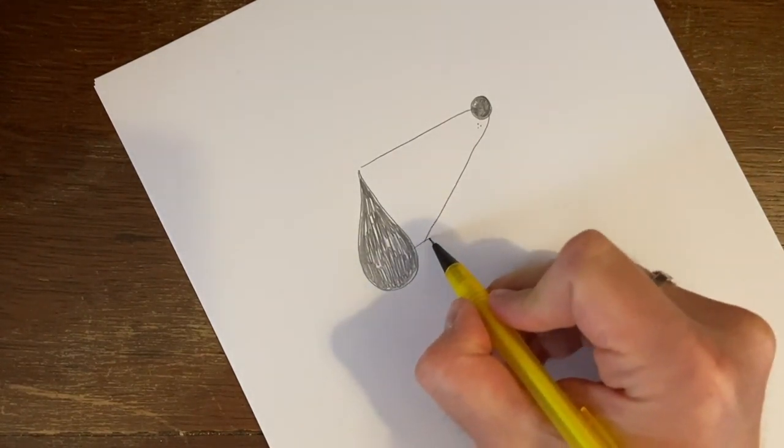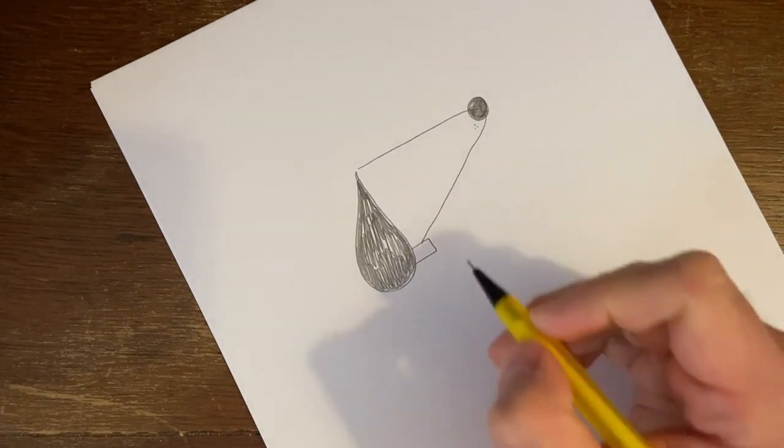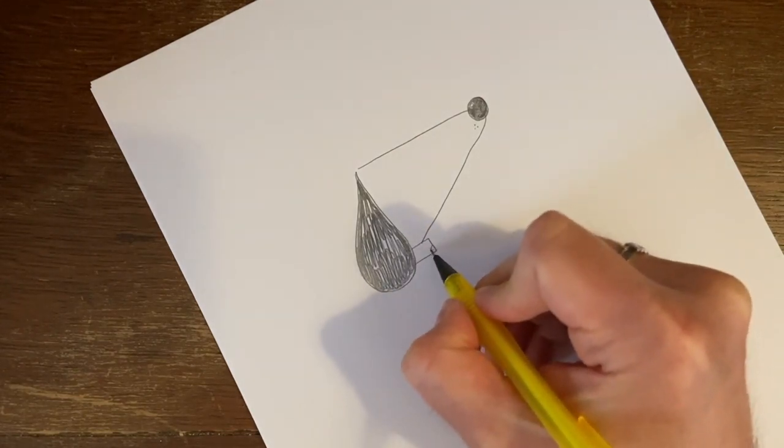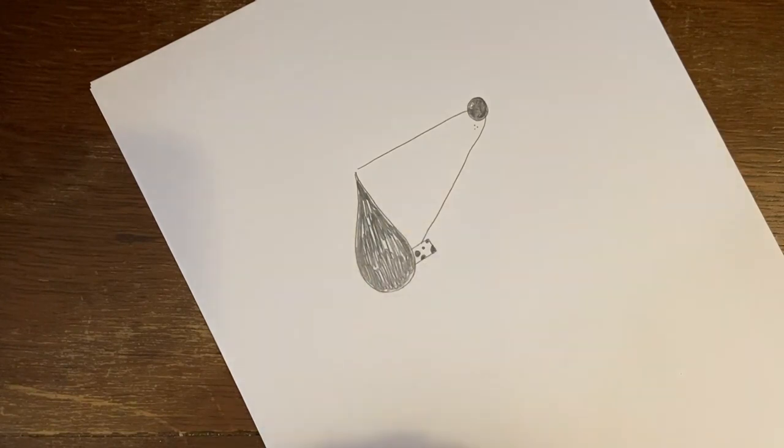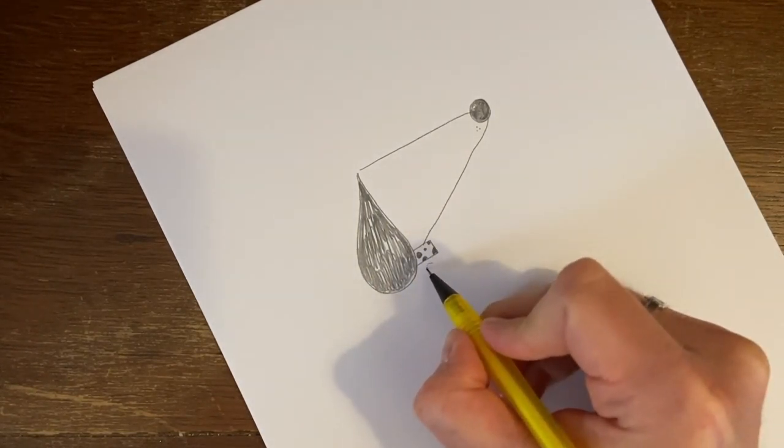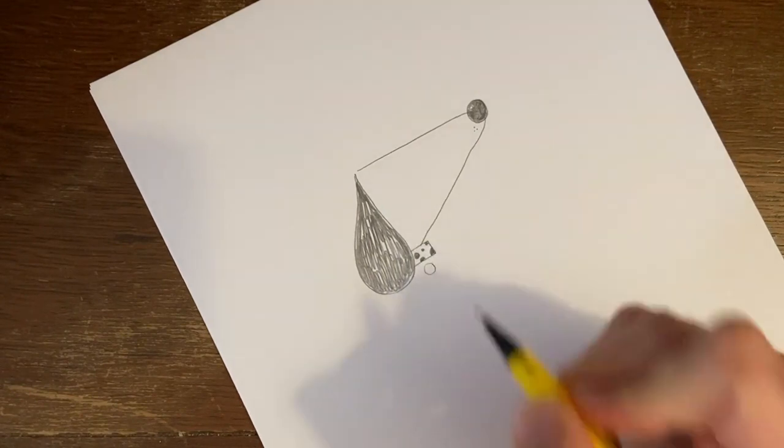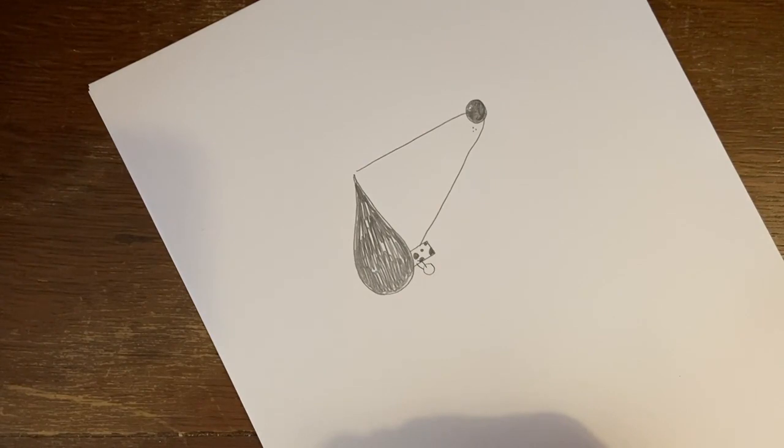Now the next thing we're going to do is we're going to draw his collar, which is a little sort of rectangle shape. Some of it's hidden behind his ear. And we're going to decorate it with some spots, Claude-like spots like this. And then underneath we're going to leave a little tiny gap and we're going to draw a circle. That's his name tag there. And we join that up to his collar with two little lines like that.